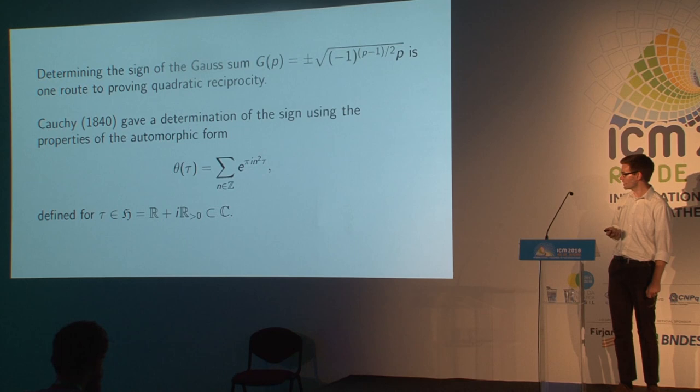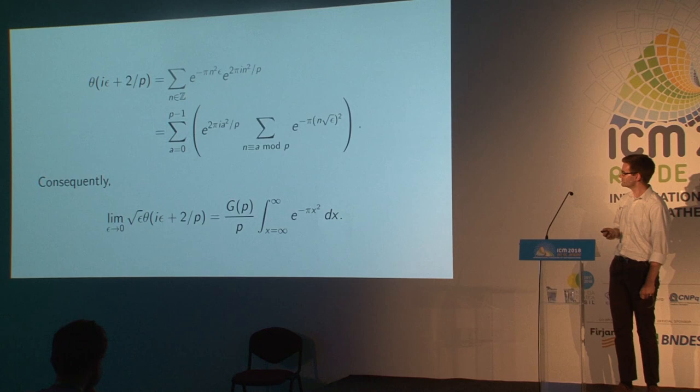The theta function is defined for an argument τ, which is any number in the complex upper half plane, and it's the sum e^{πi n² τ}, a nice absolutely convergent sum. There's only going to be one proof in my lecture today, and this is it.